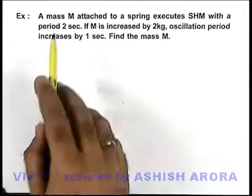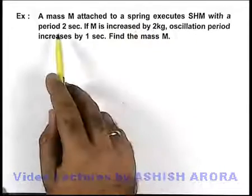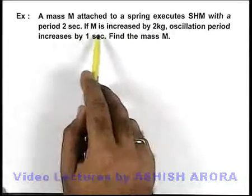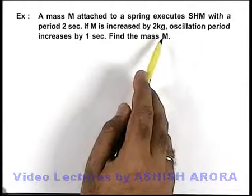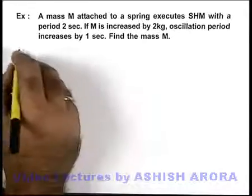In this example, a mass M attached to a spring executes SHM with a period of 2 seconds. If M is increased by 2 kilograms, oscillation period increases by 1 second. We are required to find the mass M.